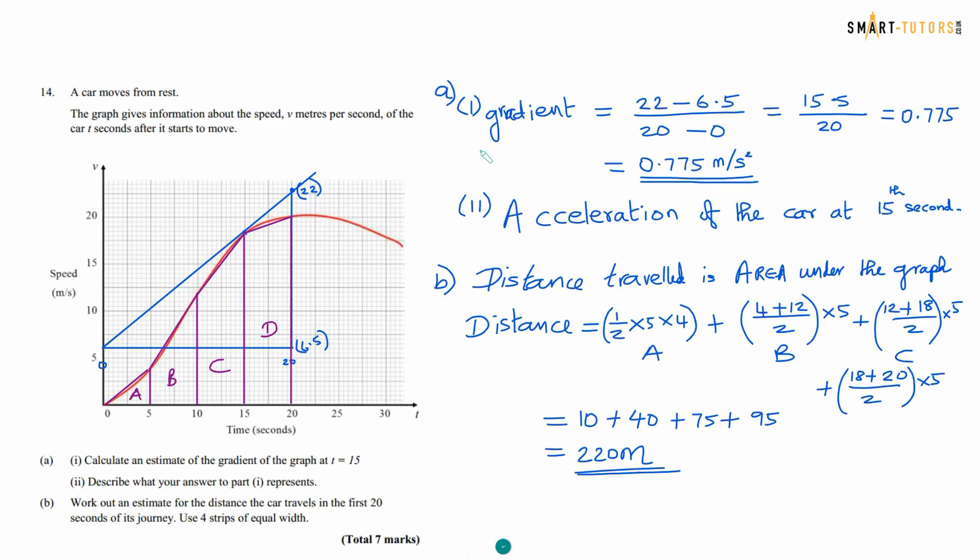Question number 14. A car moves from rest. The graph gives the information about the speed v meters per second of the car t seconds after it starts to move. Calculate an estimate of the gradient of the graph at t equal 15. All what you want to do is draw t equal 15 a gradient. Here I draw a blue color right angle triangle. So once you find out the right angle triangle, you need to find out the rise over run. Divide the rise, divide by run. That is the gradient. So the rise is 22 take away 6.5 which is 15.5. The run is 0 to 20 is 20. So that is the answer for the gradient.